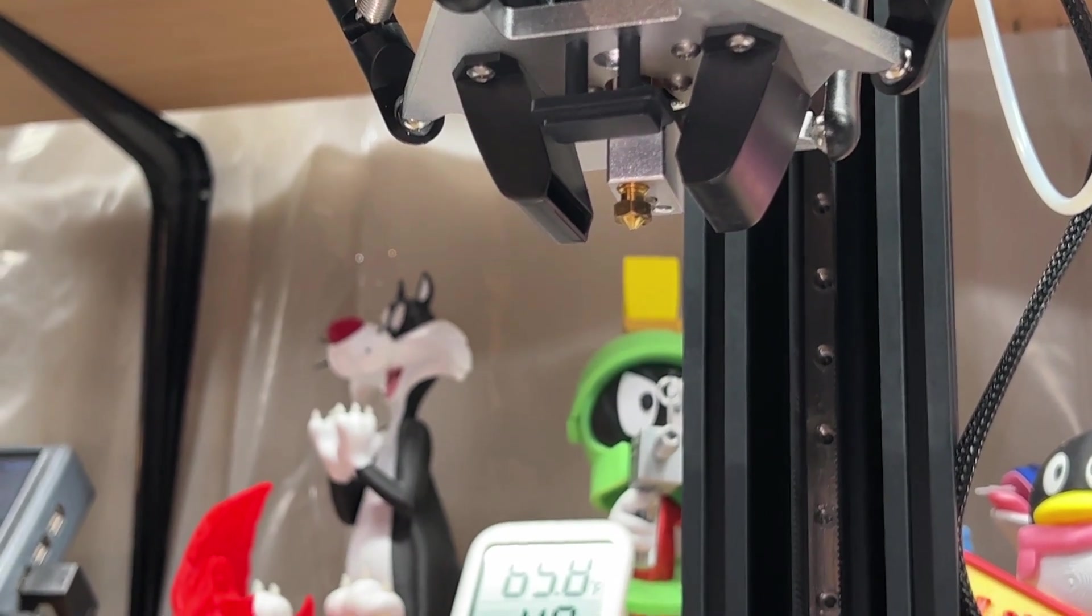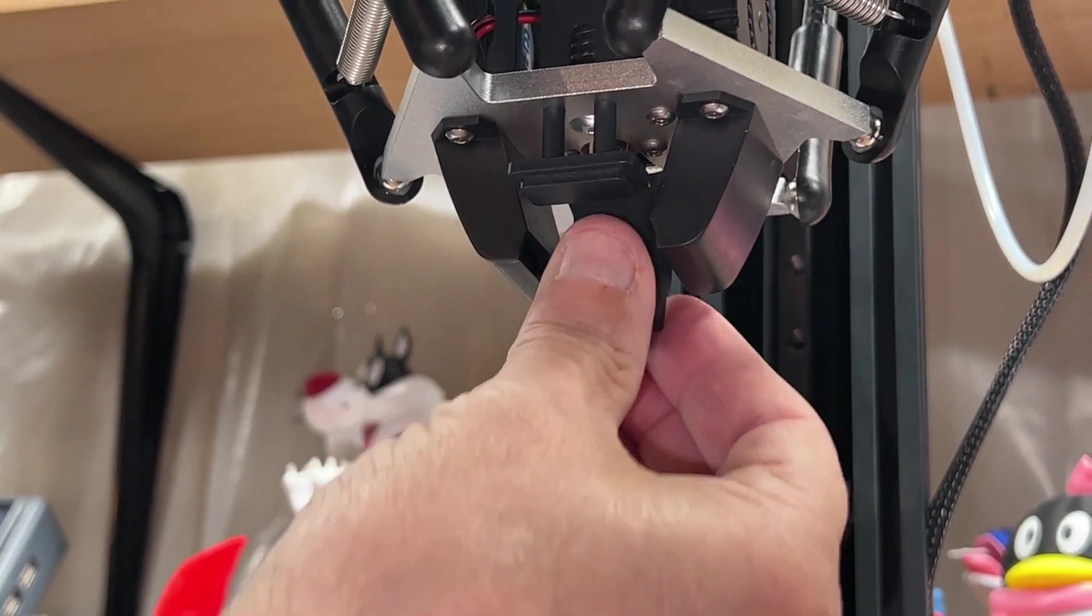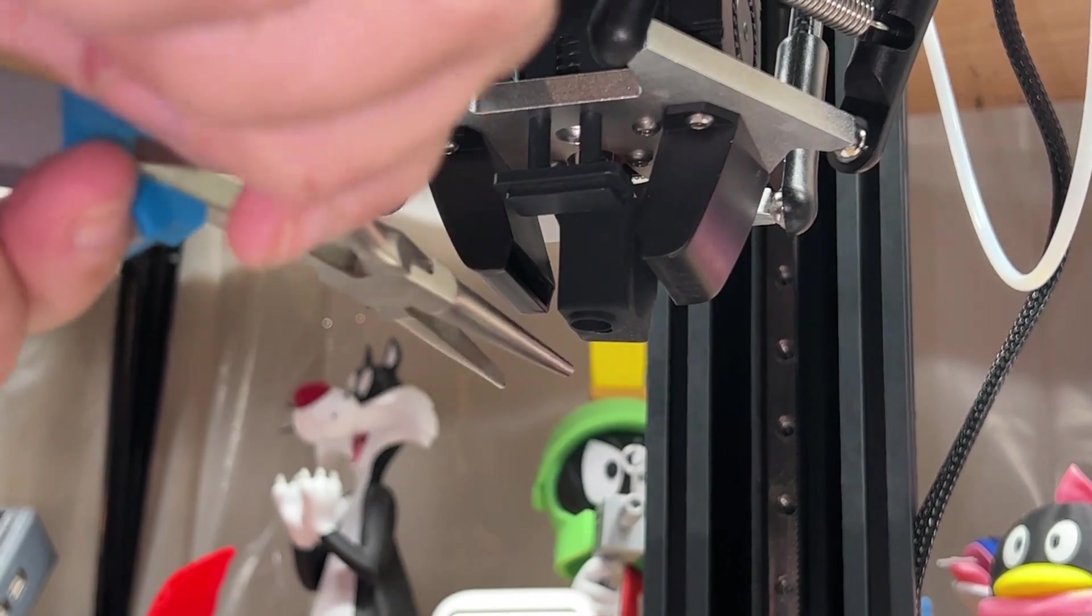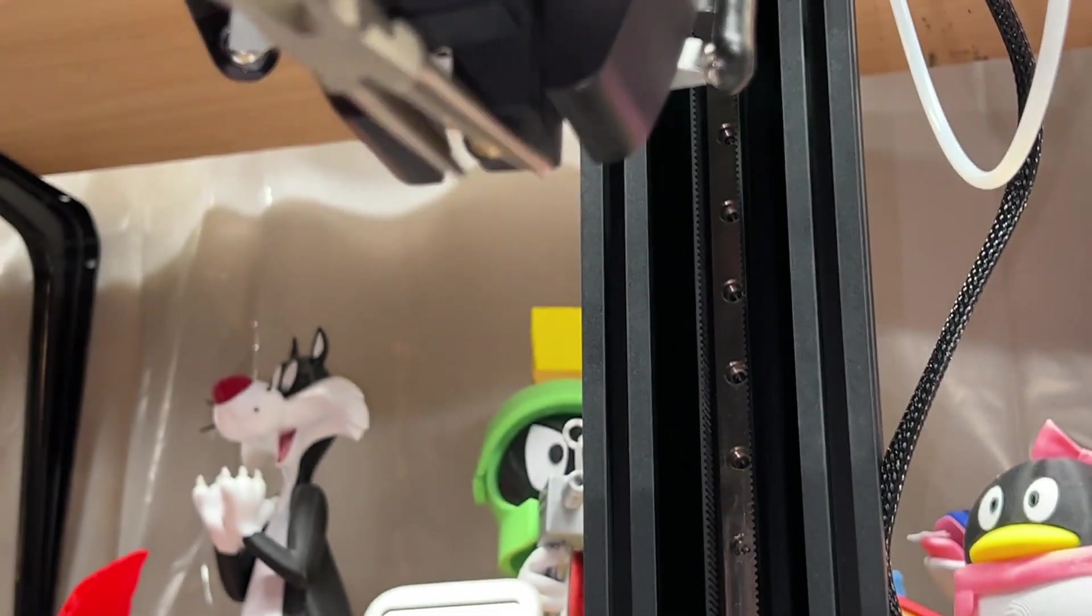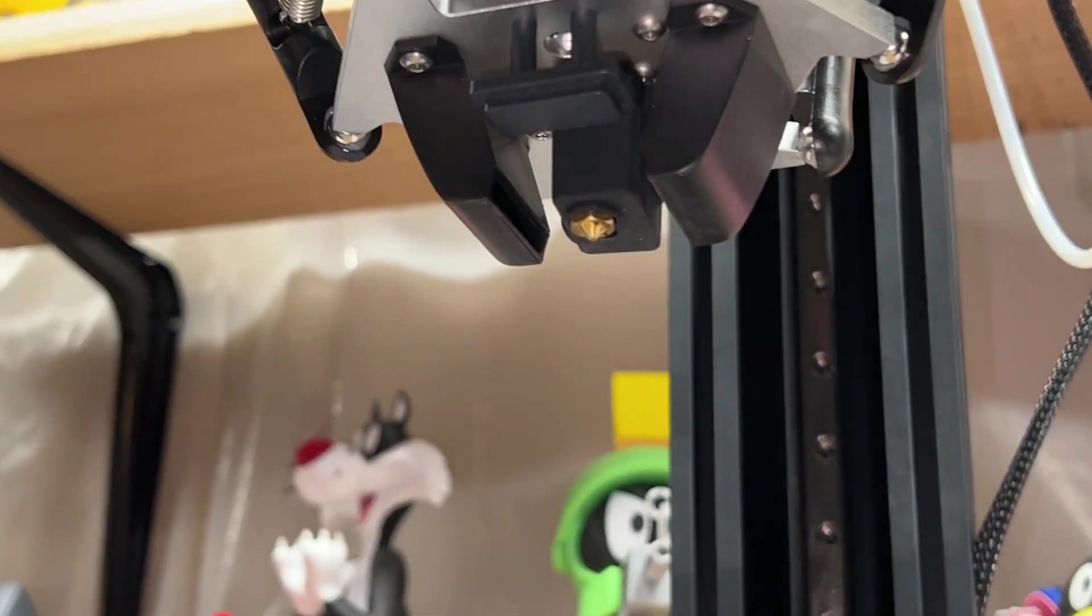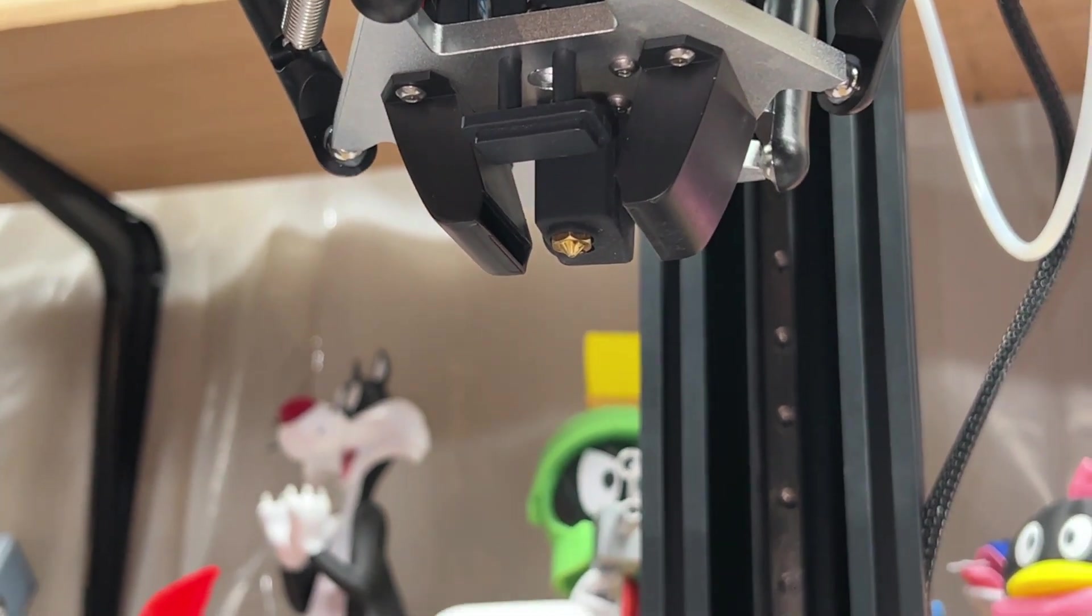And lastly, put the silicone boot back on. Again, you don't want to touch that because it's 220 degrees Celsius. Push it up with a wrench, lock it into place. And there you have it.